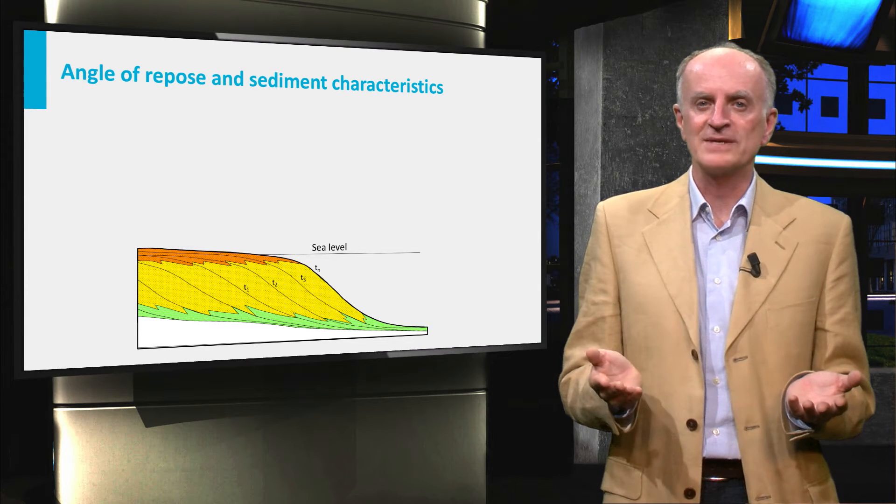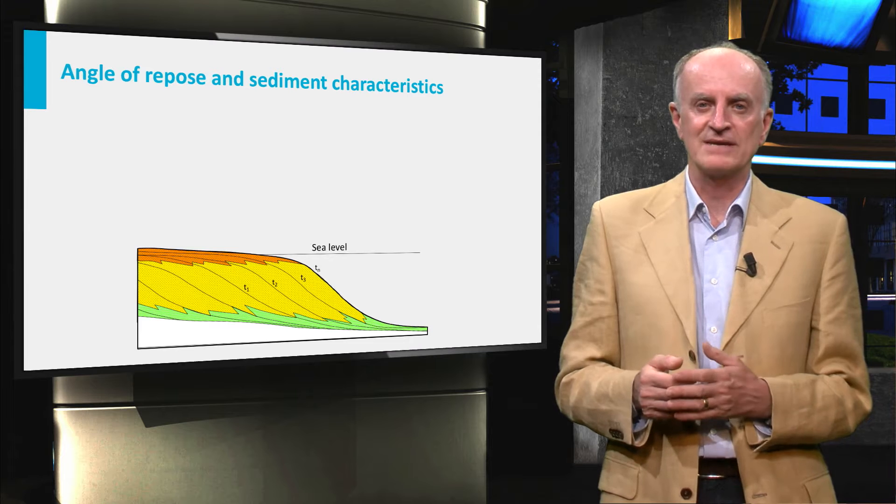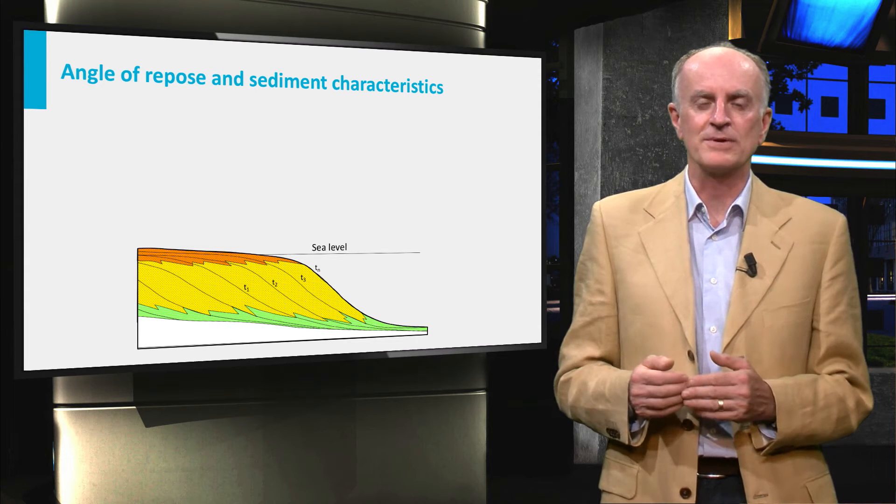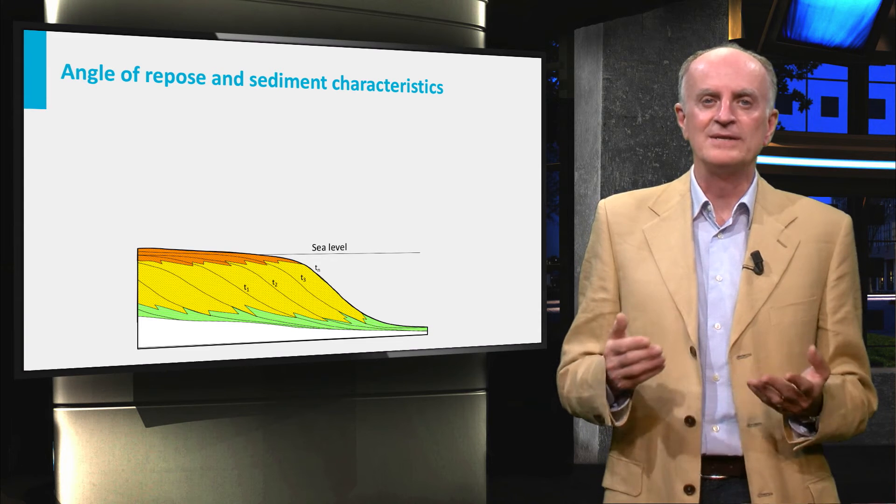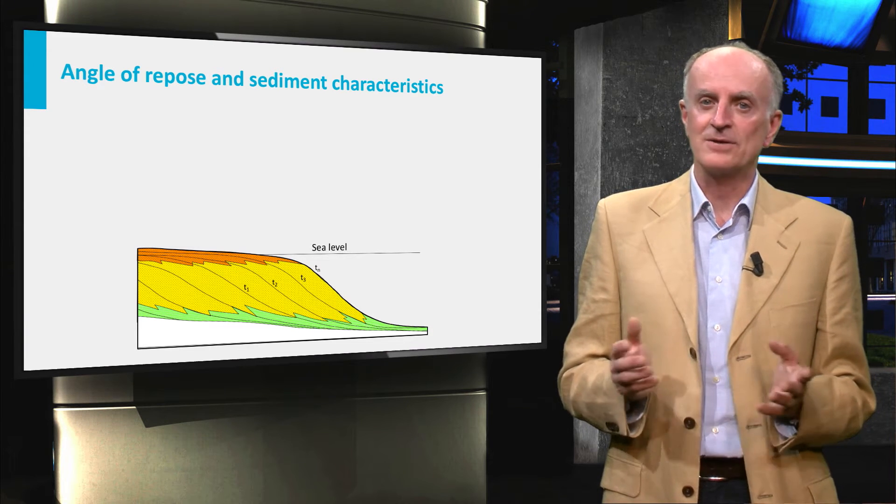Fine-grained water-saturated sediments for instance have an angle of repose close to zero. Dry sands have angles of repose in the order of 20-30 degrees. Higher angles are very rare.